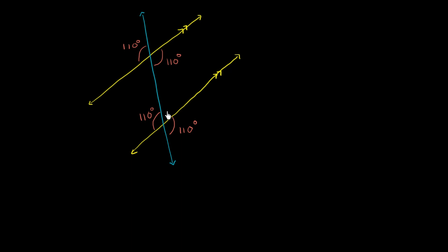Now what about these other angles? So this angle right over here — its outside ray, I guess you could say — forms a line with this angle right over here. This pink angle is supplementary to this 110 degree angle.